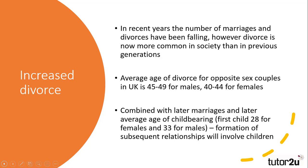People are getting married and having children later in life, as the average age for a first birth in the UK is 28 for females and 33 for males, which would suggest that any subsequent relationships people may have would involve their children still being dependents upon the support of their parents.